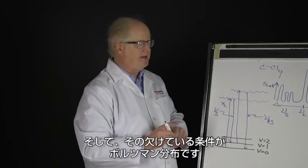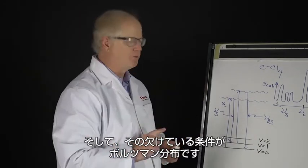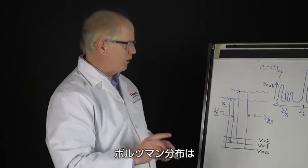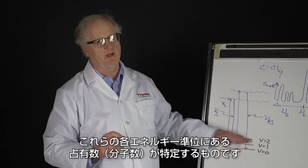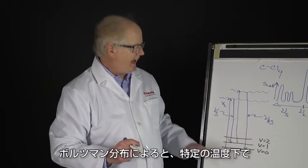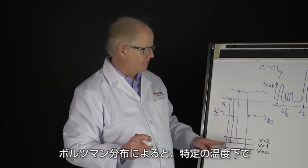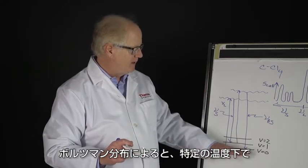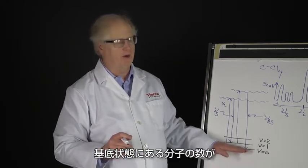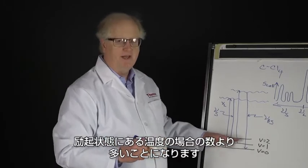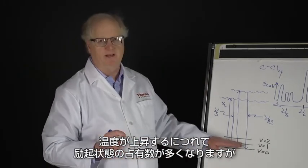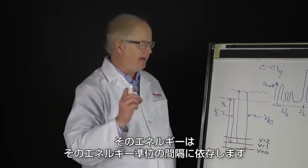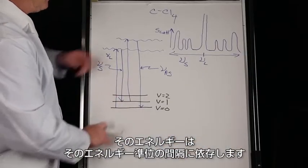And that one piece that's missing is the Boltzmann distribution. The Boltzmann distribution determines what the population of each one of these energy levels is. At a given temperature, the Boltzmann distribution would say more of your molecules are in the ground state than they are in the excited state. As the temperature goes up, you can populate the excited state.